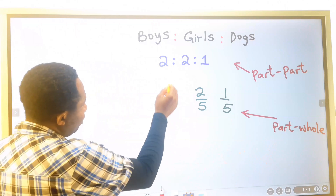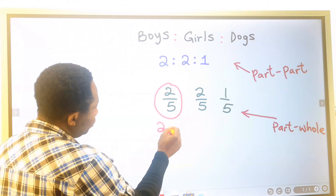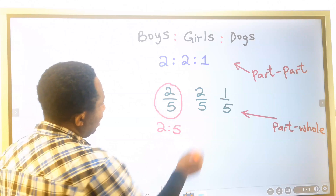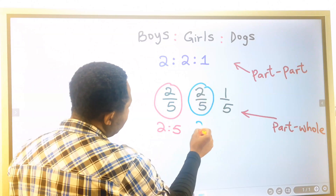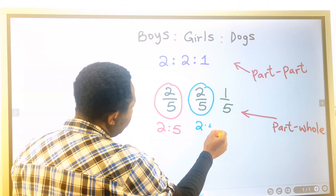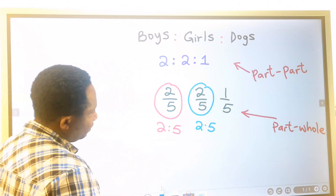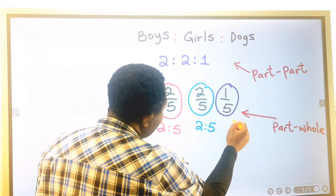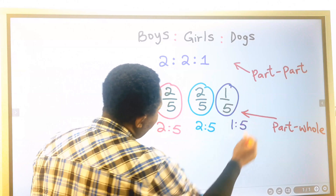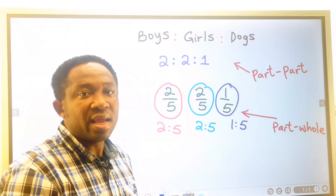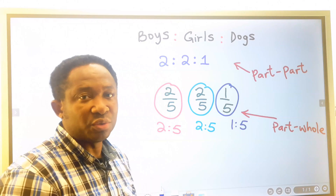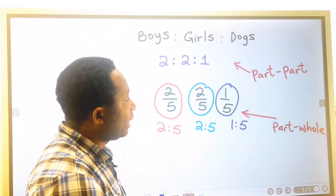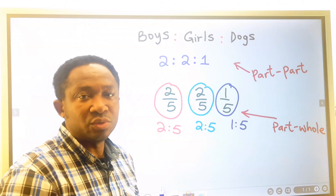So the boys are two to five, the girls are also two to five, and for the dog, this is one to five. In any given ratio, you are either dealing with part-to-part or part-to-whole.